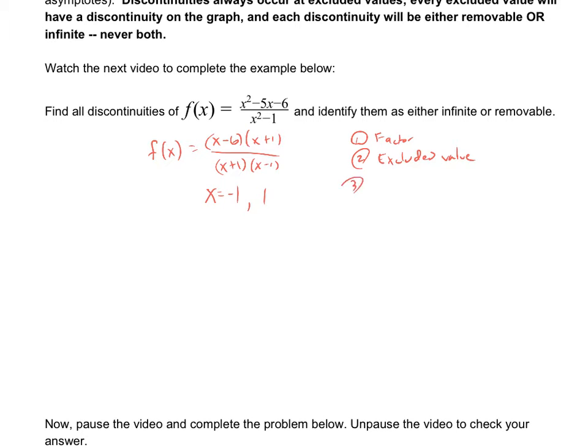Now, here's the key: After you found the excluded values, only after you found them, you simplify the fraction. So we have an x plus 1 here that cancels out.